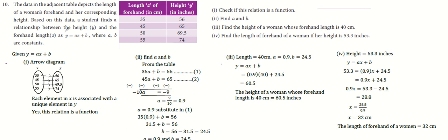a student finds the relation between the height and the forehand length as y equals ax plus b, where a and b are constants. Check this relation is a function.